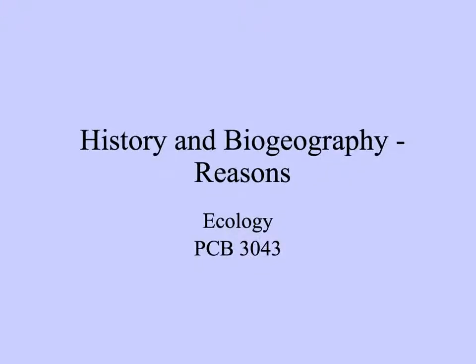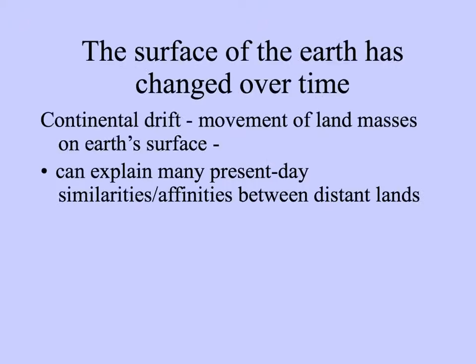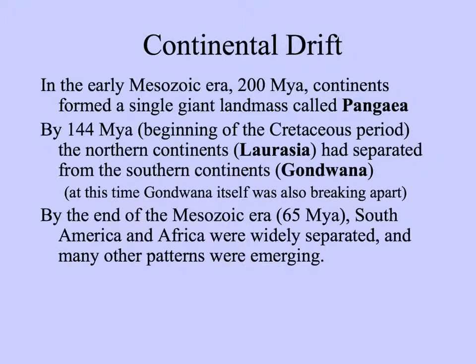Let's look at some of the reasons for the biogeographic patterns we see. Many of the similarities and affinities we see among groups of organisms in different parts of the world can be understood if we realize that the surface of the earth has changed over time. The huge land masses have moved very slowly. Before continental drift, the continents all formed a single gigantic landmass called Pangaea.